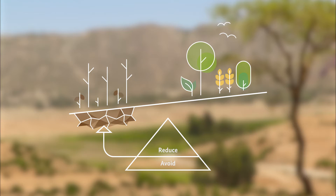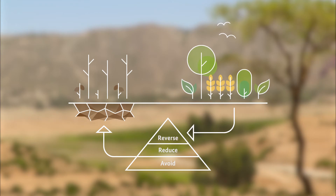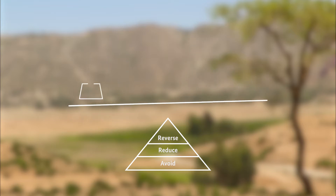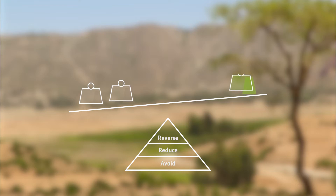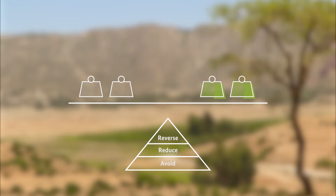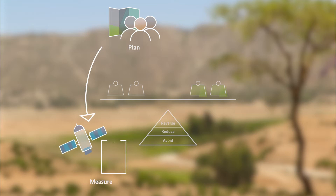Partial degradation that cannot totally be avoided is then compensated by restoration and rehabilitation. Ideally, the resulting neutrality brings land use into balance, so that in net terms any new degradation will be counterbalanced with the reversal of past degradation. Because land degradation neutrality is an ongoing steering mechanism, a continuous planning, monitoring, and adjustment process is needed.